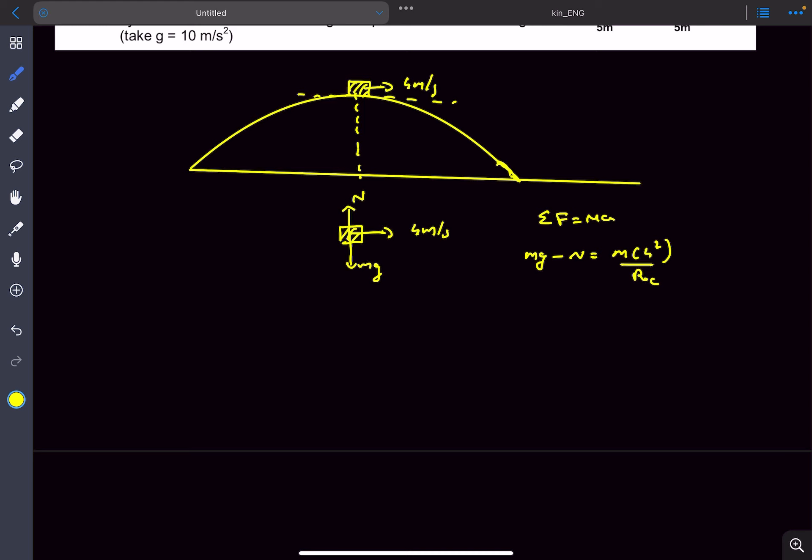So if we get the radius of curvature at the topmost point of the parabola, then we can get the normal reaction. So that's what we'll be doing.